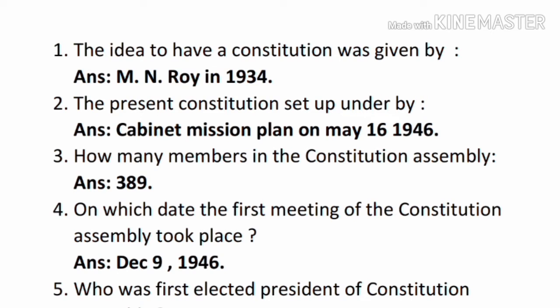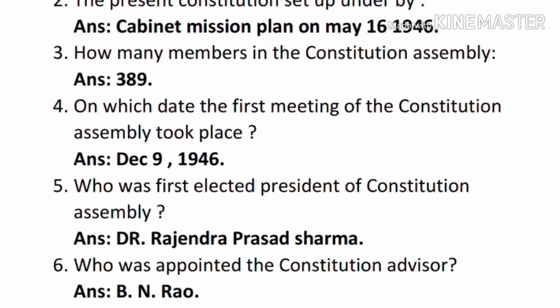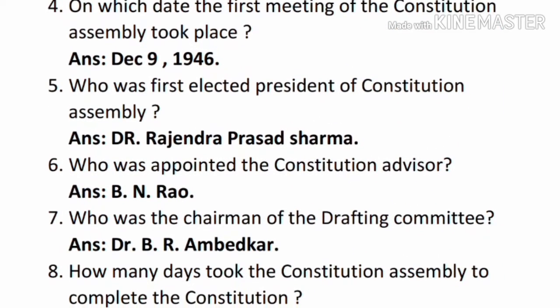Question number three: how many members were in the Constituent Assembly? — Answer: 389. Question number four: on which date did the first meeting of the Constituent Assembly take place? — Answer: December 9, 1946. Question number five: who was the first elected president of the Constituent Assembly? — Answer: Dr. Rajendra Prasad. Question number six: who was appointed the Constitution advisor? — Answer: B.N. Rao.